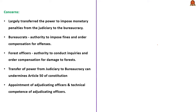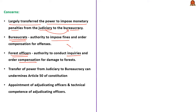Now let us see the concerns regarding the Jan Vishwas Act. Even though the Act was introduced to improve ease of doing business, it has largely transferred the power to impose monetary penalties from the judiciary to bureaucracy. According to the Act, designated bureaucrats now have the authority to impose fines and order compensation for offences under different laws. Additionally, forest officers are also granted authority to conduct inquiries and order compensation for damage to forest. This can undermine the constitutional principle of separation of powers and goes against Article 50 of the Constitution. Critics also raise concerns about the appointment of adjudicating officers and their technical competence.